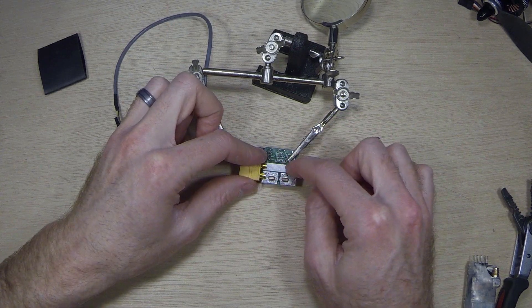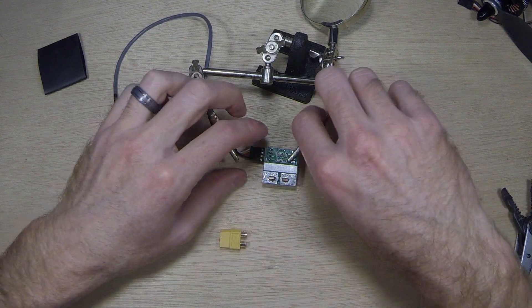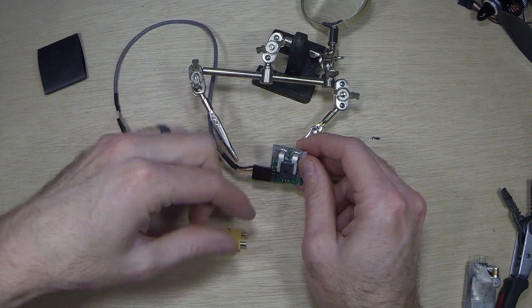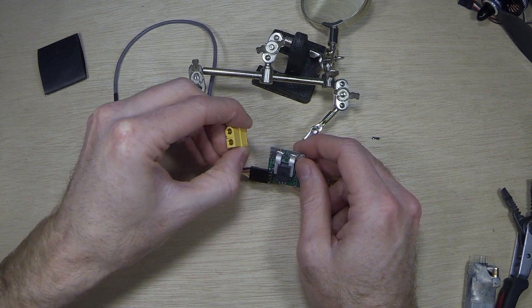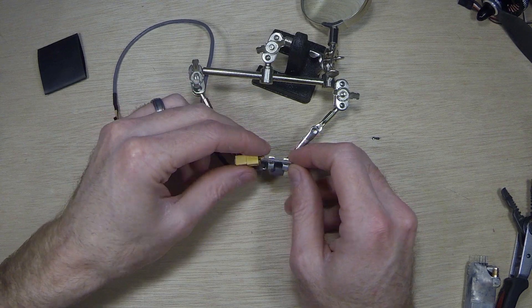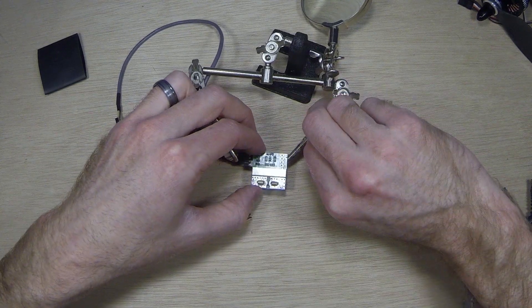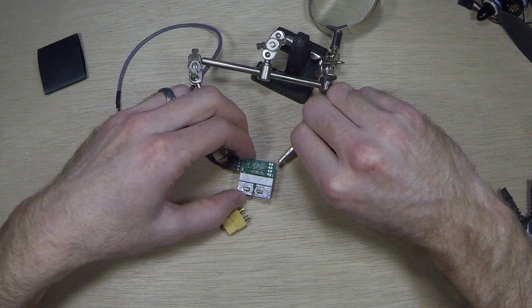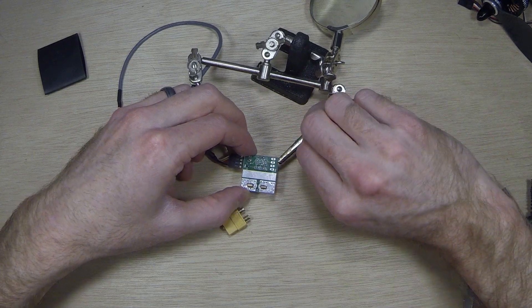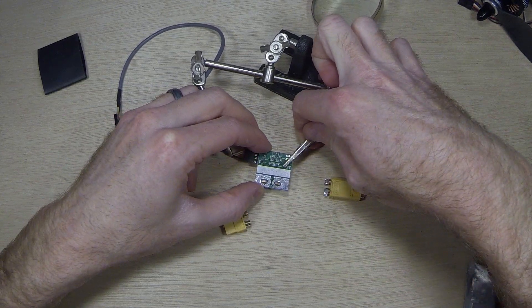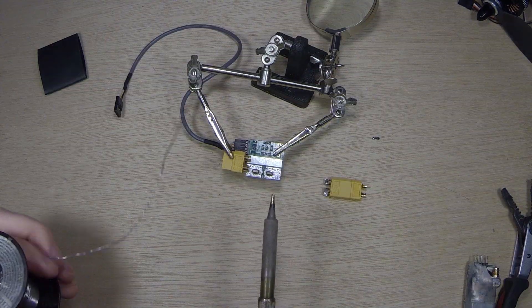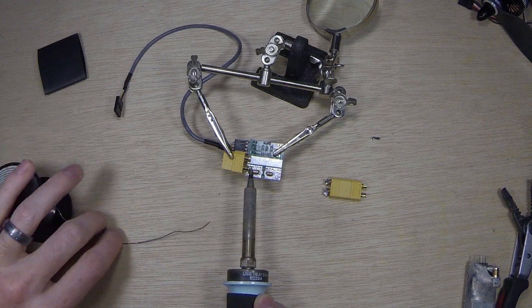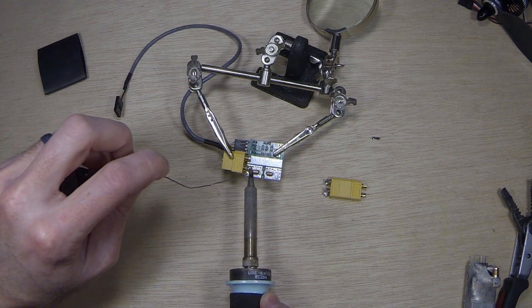Your ground is going to be the solid bar, your positive is the outside. And then you want to look at the back here and make sure that the ESC side matches what your battery connector is. So let's get this in the helping hands here. And make sure when you're grabbing it not to grab any of the chips or anything that's on here if you're using a helping hand.